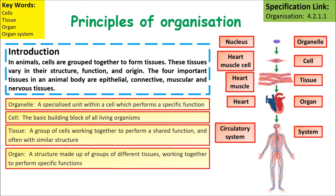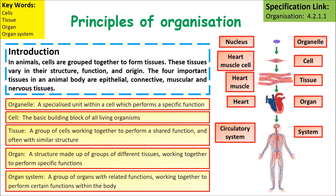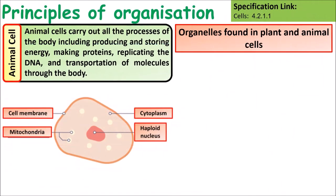A tissue is a group of similar cells that carry out a particular function. An organ is a structure made up of a group of different tissues working together to perform a function — for example, the heart. An organ system is a group of organs with related functions working together to perform a certain function within the body.